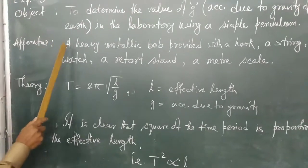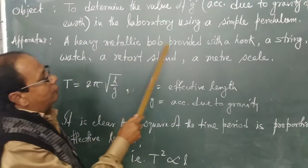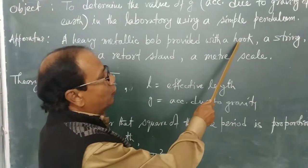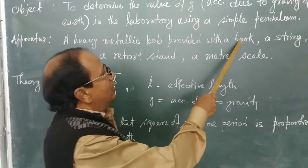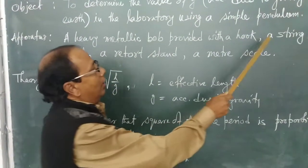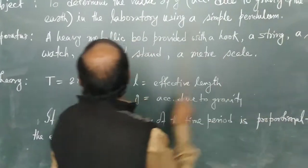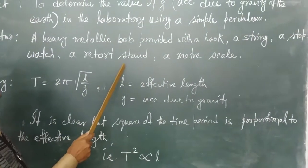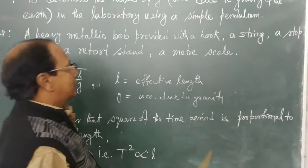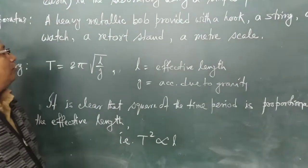Apparatus are a heavy metallic bob provided with a hook. Through this hook we will be using a string to tie it. A string, a stopwatch, a retort stand and a meter scale. Now let's go to theory.